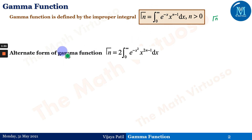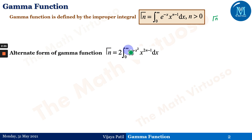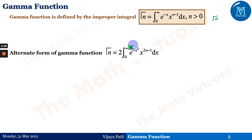There is also an alternative form of the gamma function, given as: gamma of n equals 2 times the integration from 0 to infinity of e to the power minus x squared, times x to the power 2n minus 1, dx. This is the alternative definition of the gamma function.